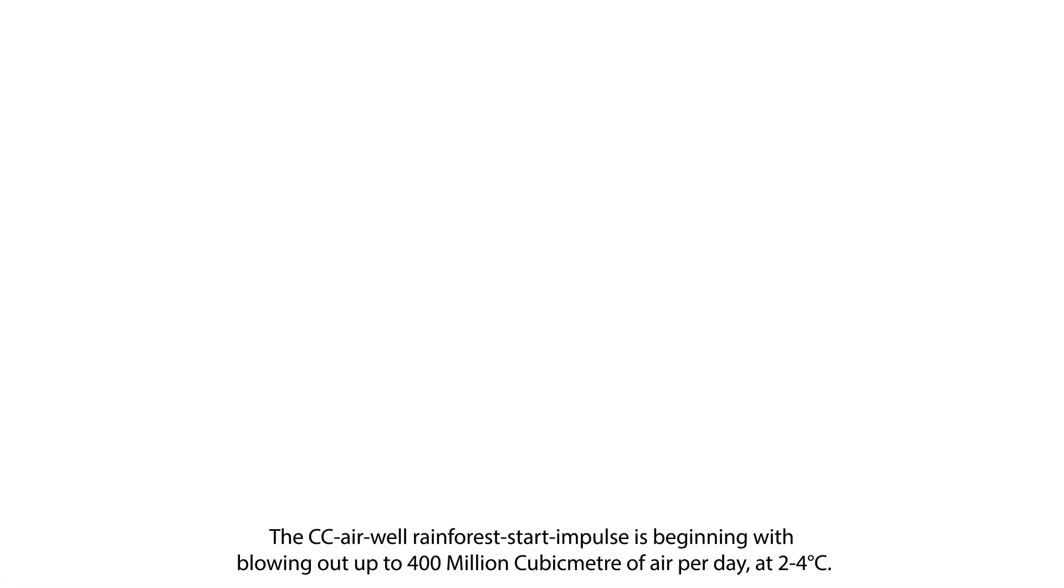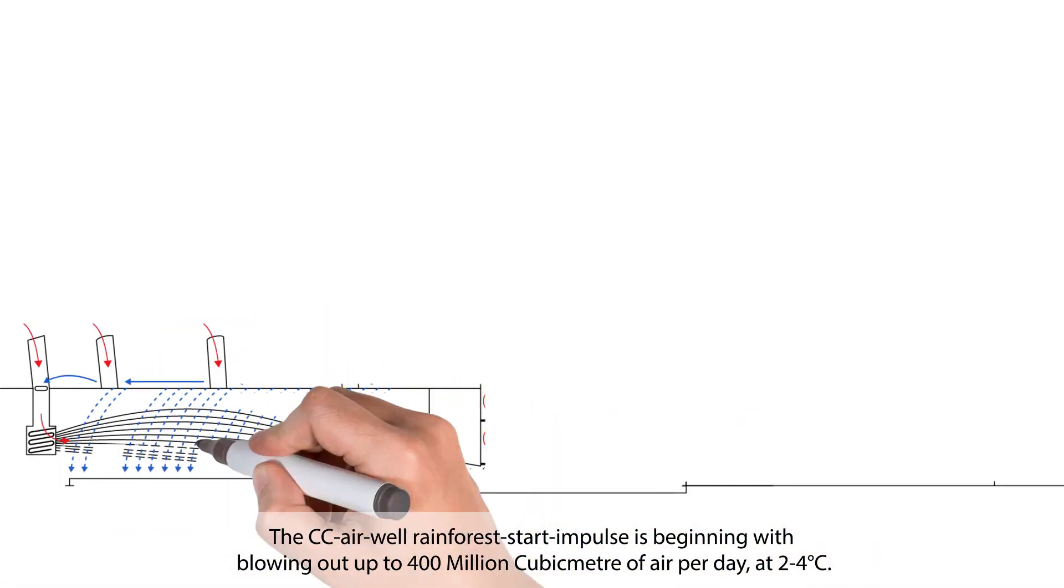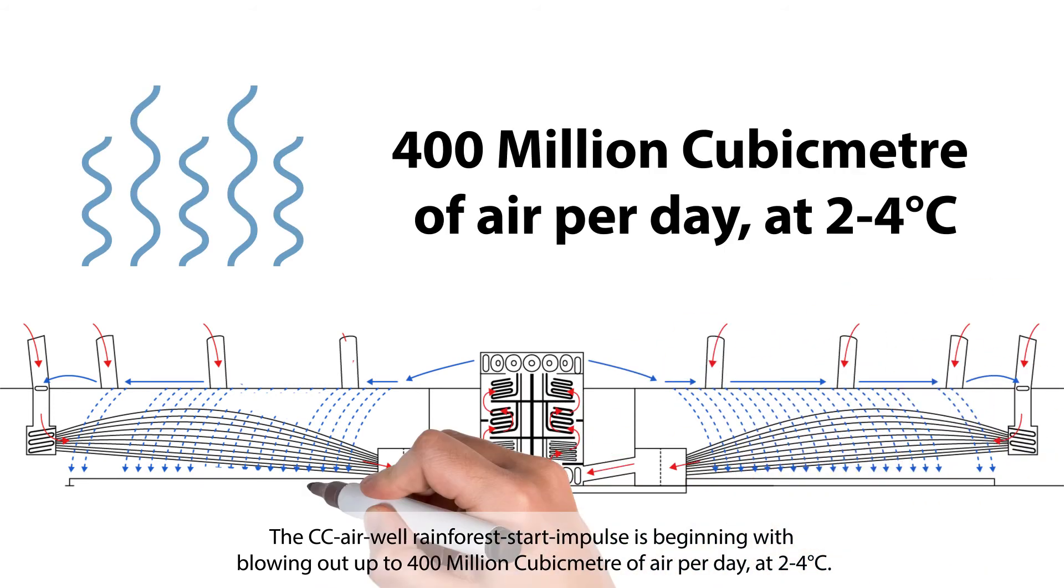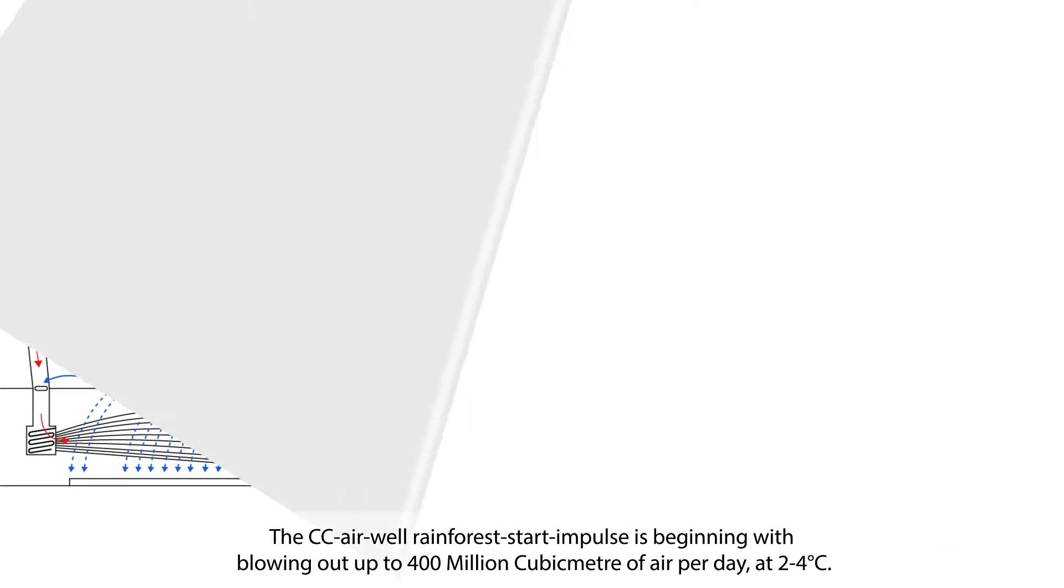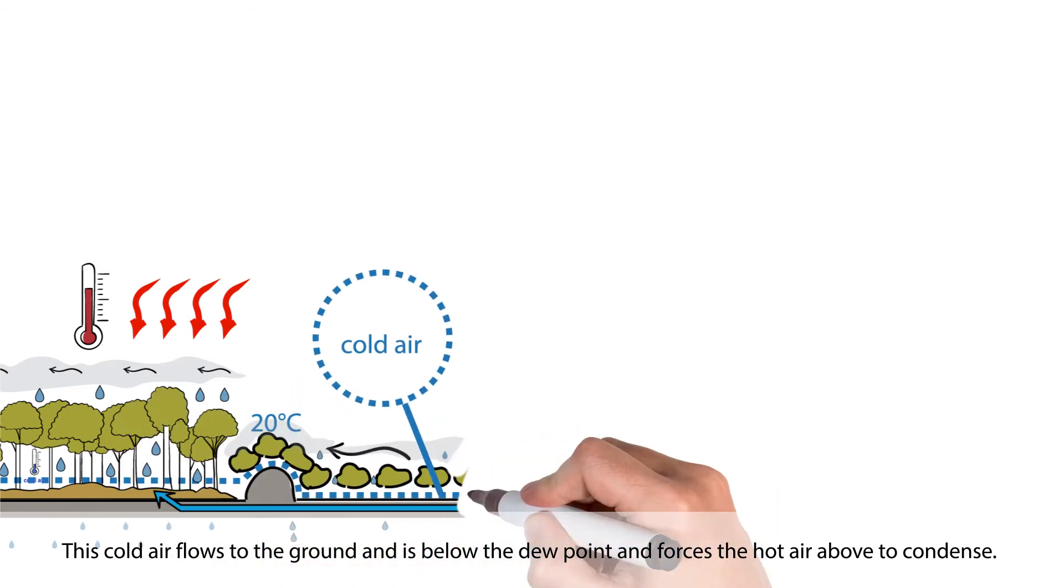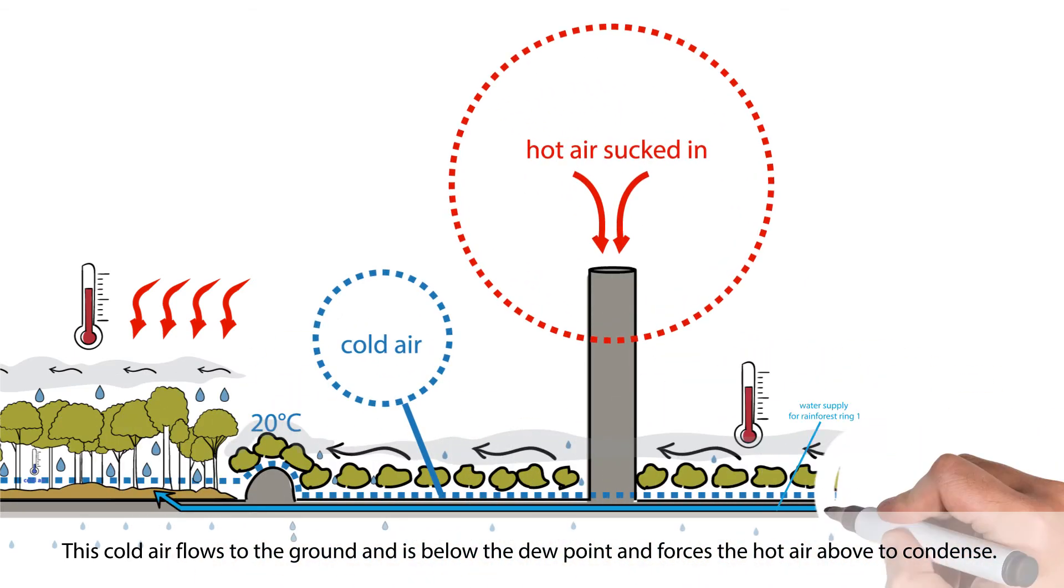The CC airwell rainforest start impulse begins by blowing out up to 400 million cubic meters of air per day at 2 to 4 degrees centigrade. This cold air flows to the ground and is below the dew point and forces the hot air above to condense.